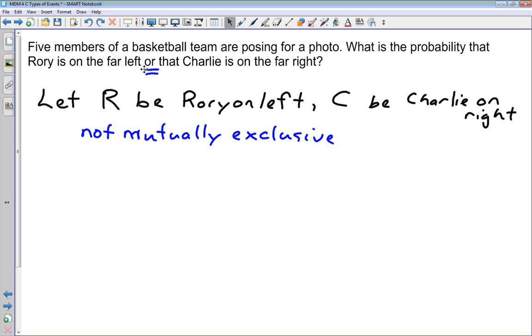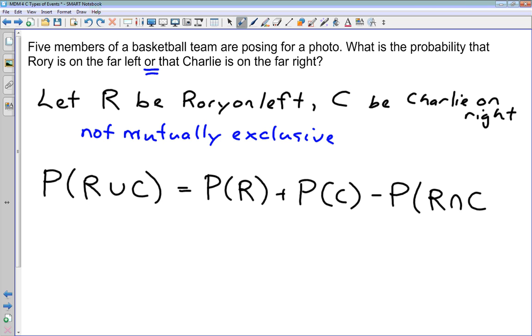So the probability that we're interested in is we want the probability of R or C or R union C. We know that we're going to use this formula. Probability of R plus probability C minus the intersection of those two. So probability of R and C.